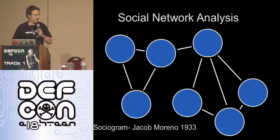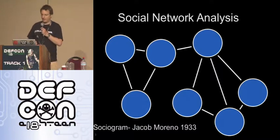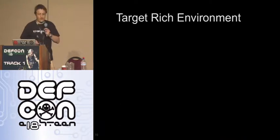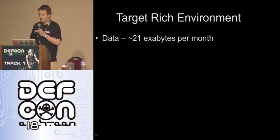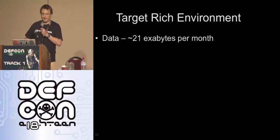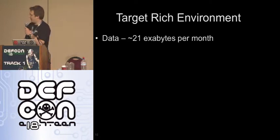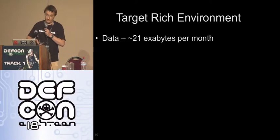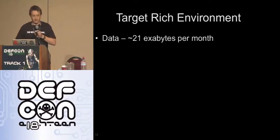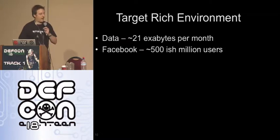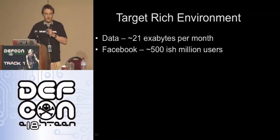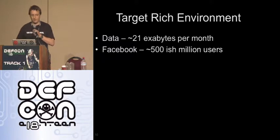Target-rich environment: there's a Cisco report saying there's 21 exabytes of data flowing around per month. Facebook had around 500 million users, Twitter around 100 million. So there's a lot of people with their information out there.